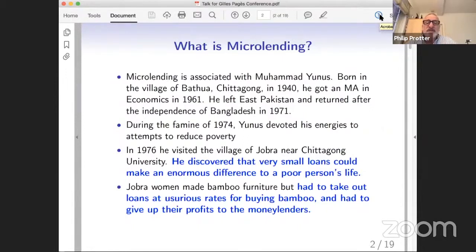There was a big famine in 1974, and Yunus devoted his energies to try to reduce poverty. In 1976, he visited the village of Chobra near Chittagong, which has two and a half million people, and he discovered that very small loans could make an enormous difference in a poor person's life.